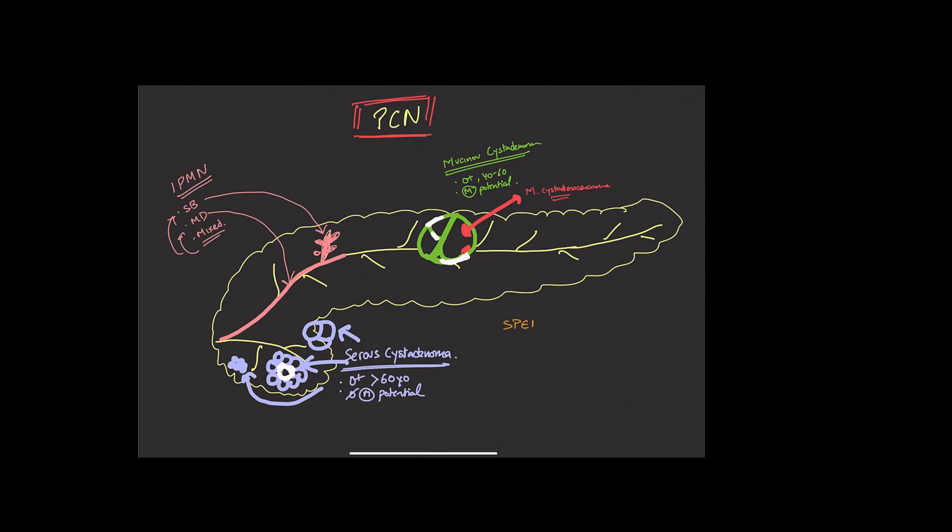Also going to talk a little bit about SPEN tumors, solid papillary epithelial neoplasms. These are neoplasms that are seen more often in females, typically less than age 40 years old, so a little younger than mucinous adenomas. It can occur anywhere as well, but have a predilection for the body and tail of the pancreas.